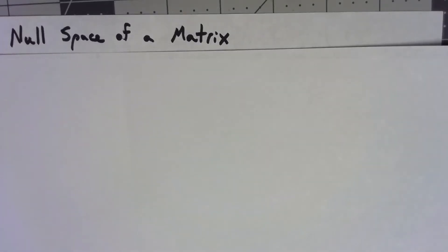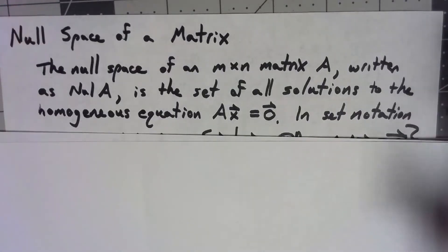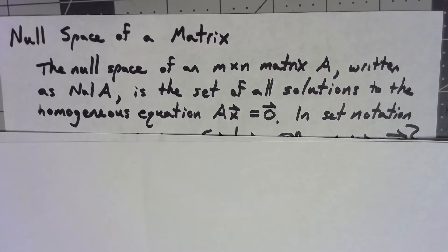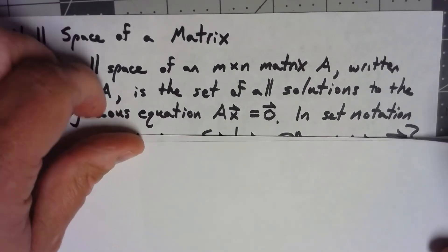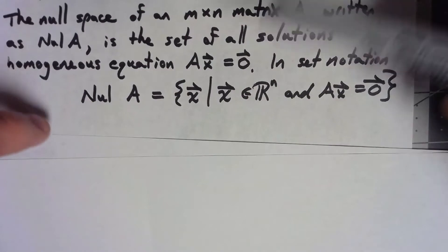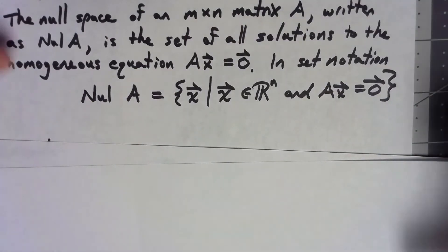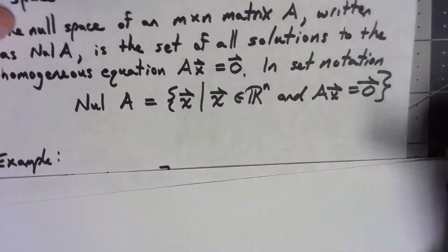Let's talk about the null space of a matrix. By definition, the null space of an m by n matrix, written as null A, is the set of all solutions to the homogeneous equation A times x equals zero. In set notation, that means the null space of A is the set of x such that Ax equals zero — the same thing, just in more compact form.